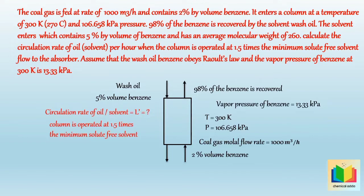In this problem we have to calculate the solvent flow rate to the absorber when it is 1.5 times the minimum oil circulation rate. That means first we have to calculate L dash minimum, which is the minimum flow rate of benzene-free solvent, and then L dash actual, the actual benzene-free solvent flow rate. Now let's solve this problem.